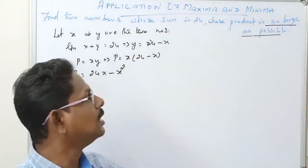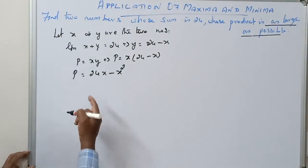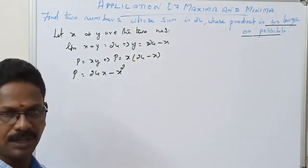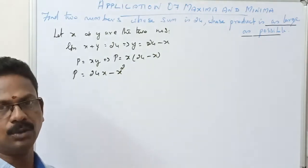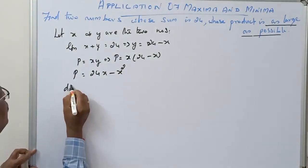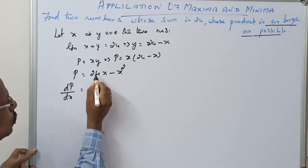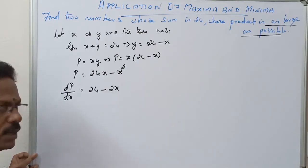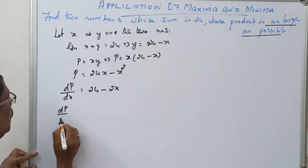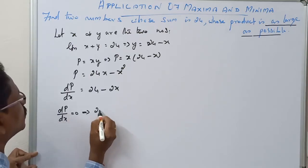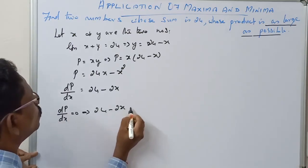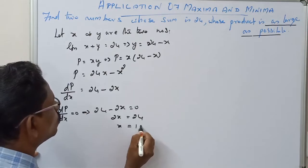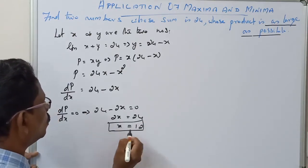By maxima and minima, using the second derivative test, we need the first derivative. So dP/dx equals 24 minus 2x. Setting dP/dx equal to 0 implies 24 minus 2x equals 0, so 2x equals 24, and x equals 12.